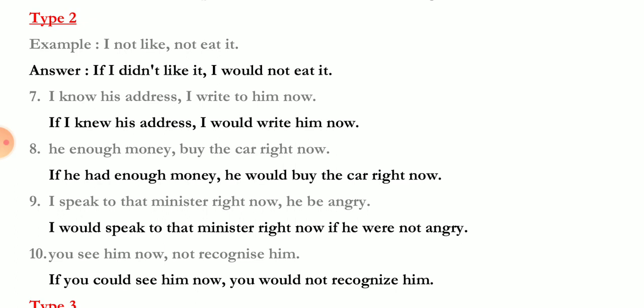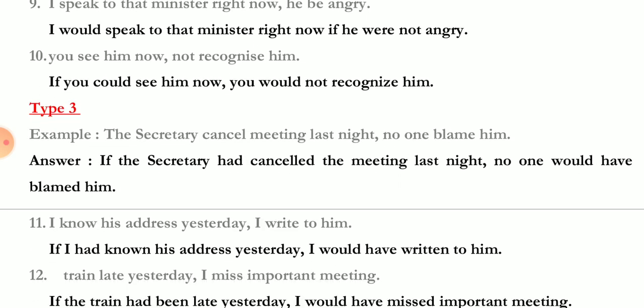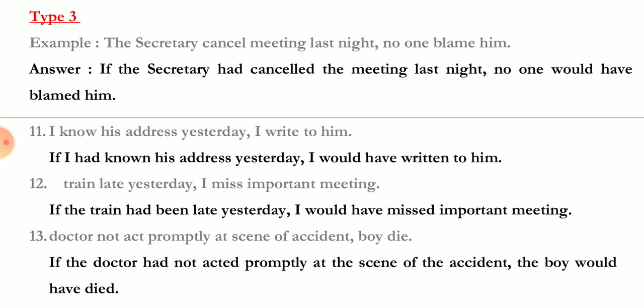'You see him now / not recognize him' — 'If you could see him now, you would not recognize him.' 'Could' is also the second form or past form of 'can.' Now we move on to Type 3.